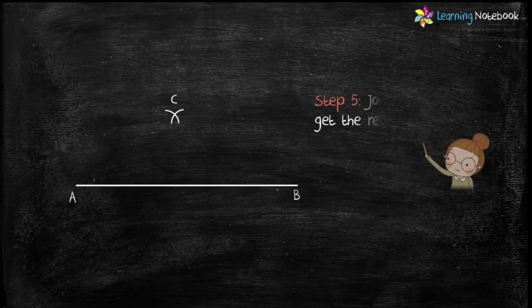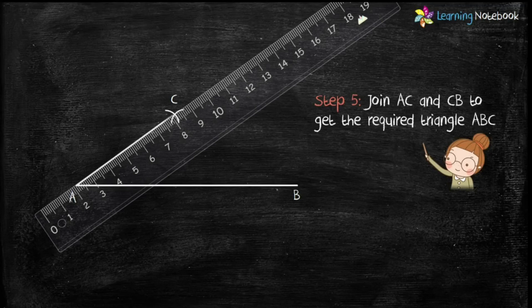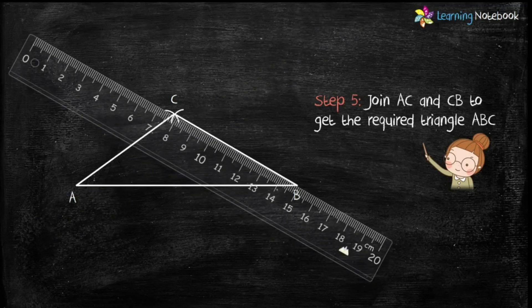Now, in last step, join AC and CB to get the required triangle ABC.